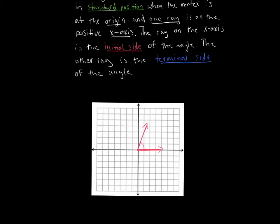Another thing to notice when looking at these angles: from now on, we're going to talk about whether an angle is positive or negative. If an angle goes from the positive x-axis to its terminal side in a counter-clockwise motion — the opposite way of a clock — it's a positive angle. If we go in a clockwise fashion, it's a negative angle.